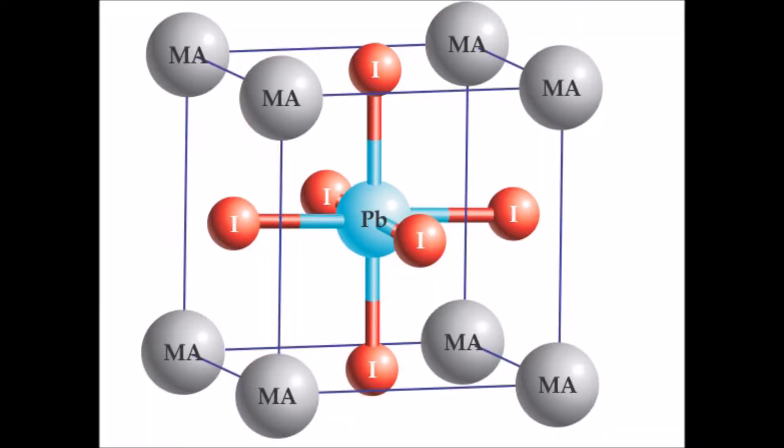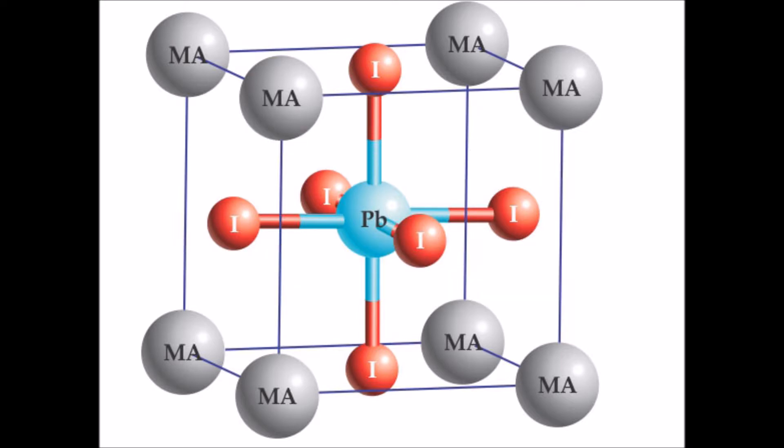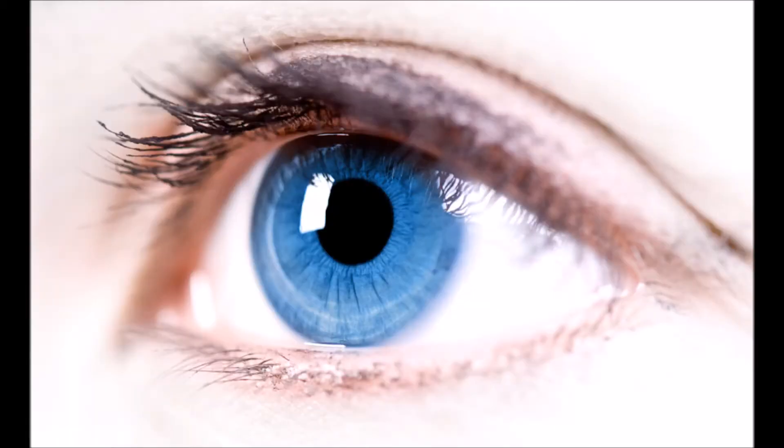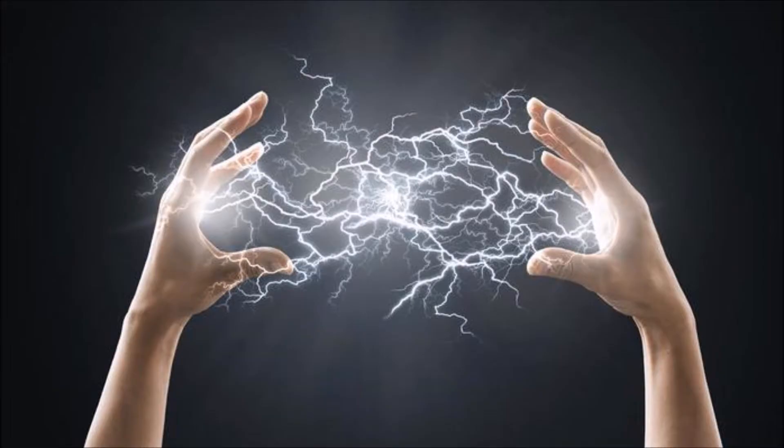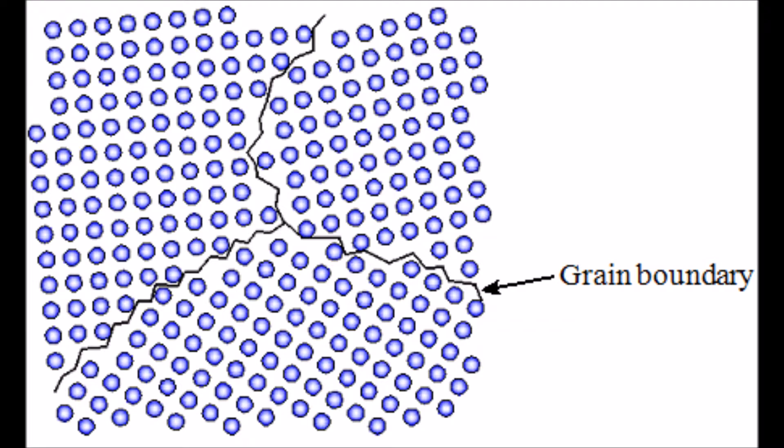The perovskite methyl ammonium lead iodide is often used in solar cells due to its high power conversion efficiency. These perovskite cells have many of the desired properties of photovoltaic absorbers. This includes high optical absorbance, high electron mobility, superior structural defect tolerance, and low surface recombination velocity and grain boundary effects.